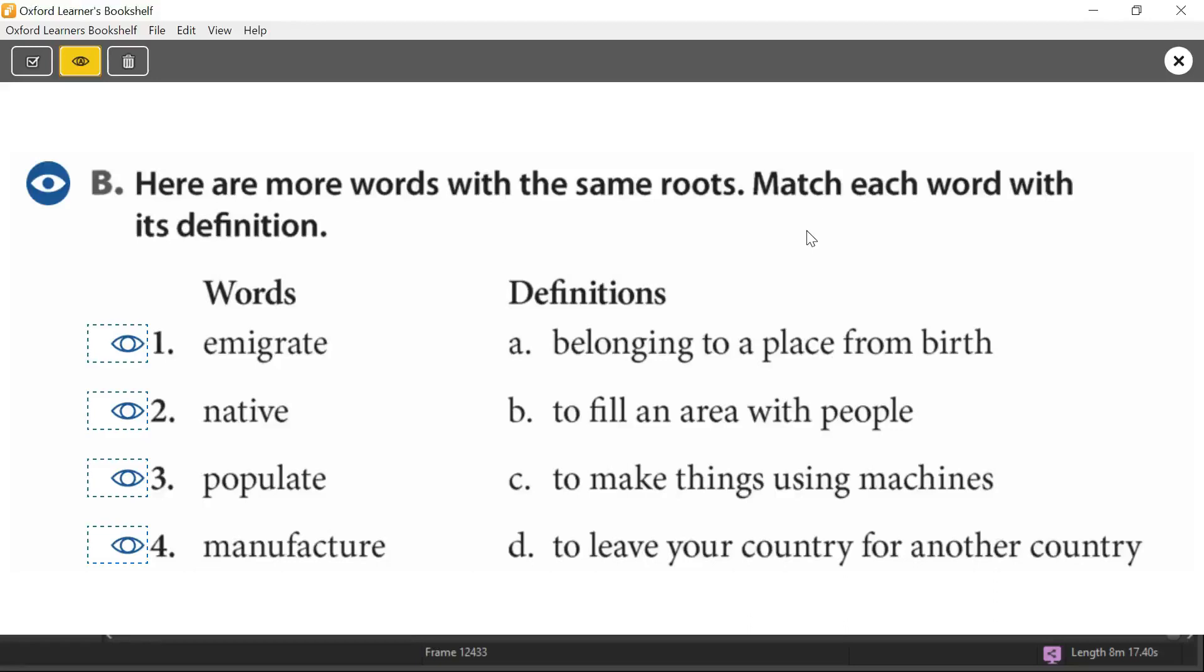Now let's look at B. Here are more words with the same roots. Match each word with its definition. So here are more words. These are kalimat. More words. And we have definitions. Tarif. The definitions here. Four words. Four definitions. And what we have to do is look for the root word in each of these kalimat. Shall we do the first one?